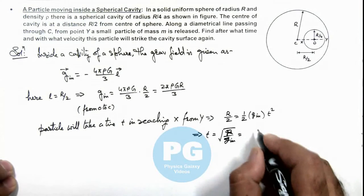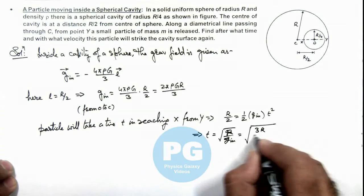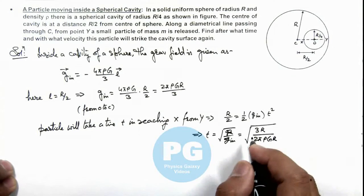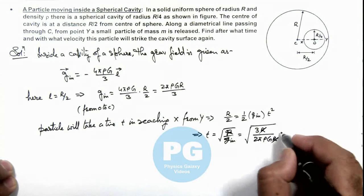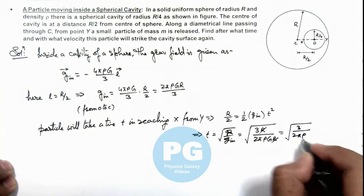which is equal to root of R divided by (3R/2πρGR). You can see this R gets cancelled out and the result is equal to the value of R/2πρG.